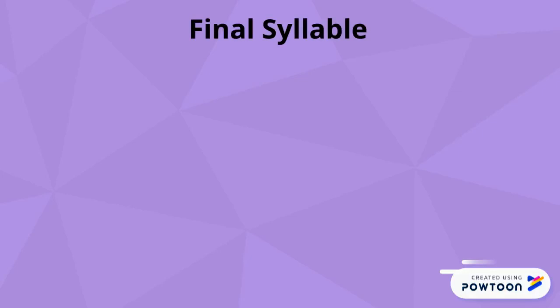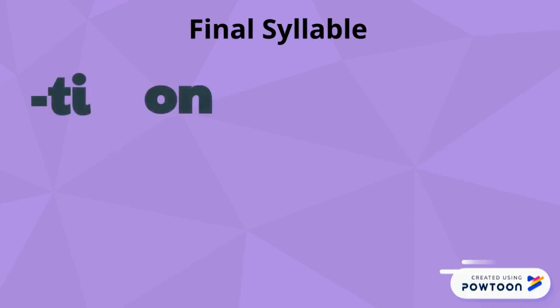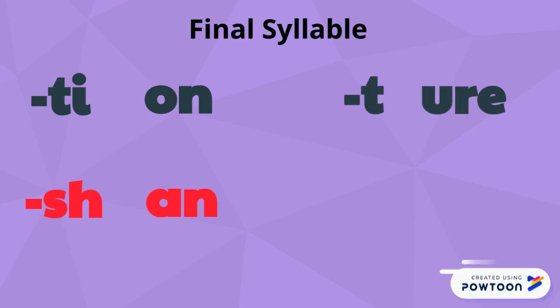Hi everyone, welcome back! Today we will learn about two sounds: 'shun' and 'chur'. In 'shun', the 'ti' will sound like 'sh' and 'on' will sound like 'an' — shun. In 'chur', 't' will sound like 'ch' and 'ure' will sound like 'ur'.